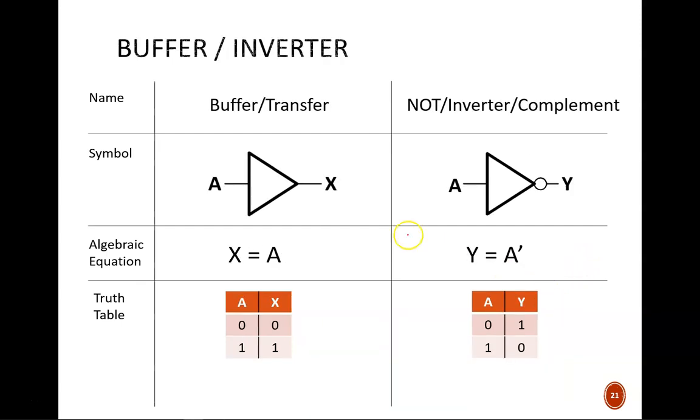The last two logic operations here are the simplest. A buffer does nothing to change the logic. It simply accepts an input and passes it directly to the output. This seems silly, right? Why even use a gate for this in a circuit? There are a couple good reasons. The best is when we employ a tri-state buffer, which can stop a signal altogether. But we'll discuss that in more detail later in the course.